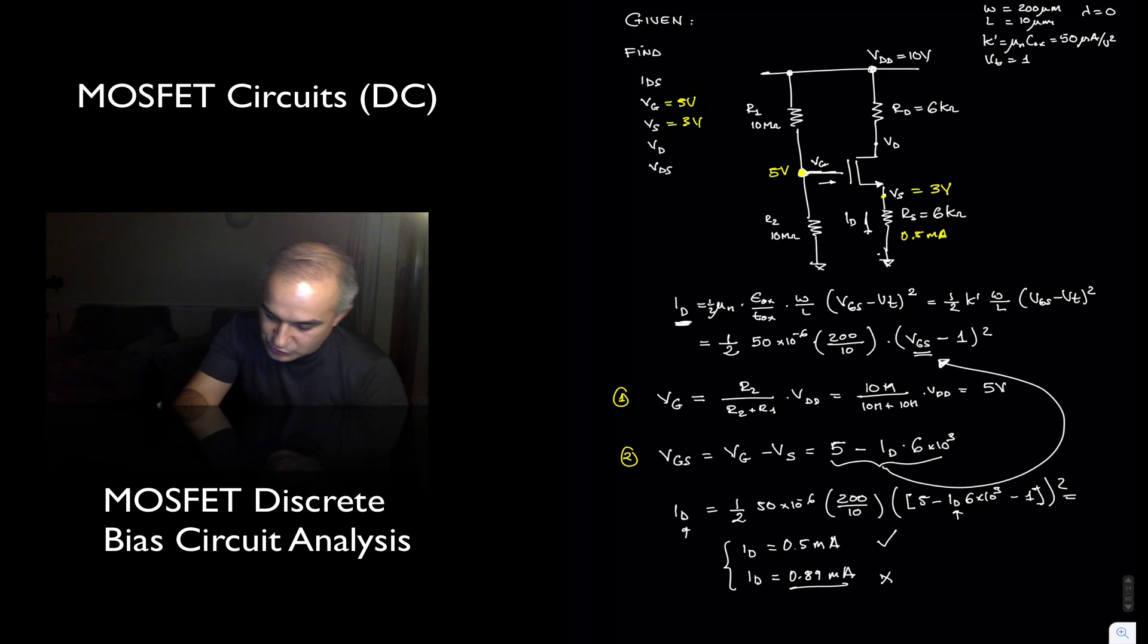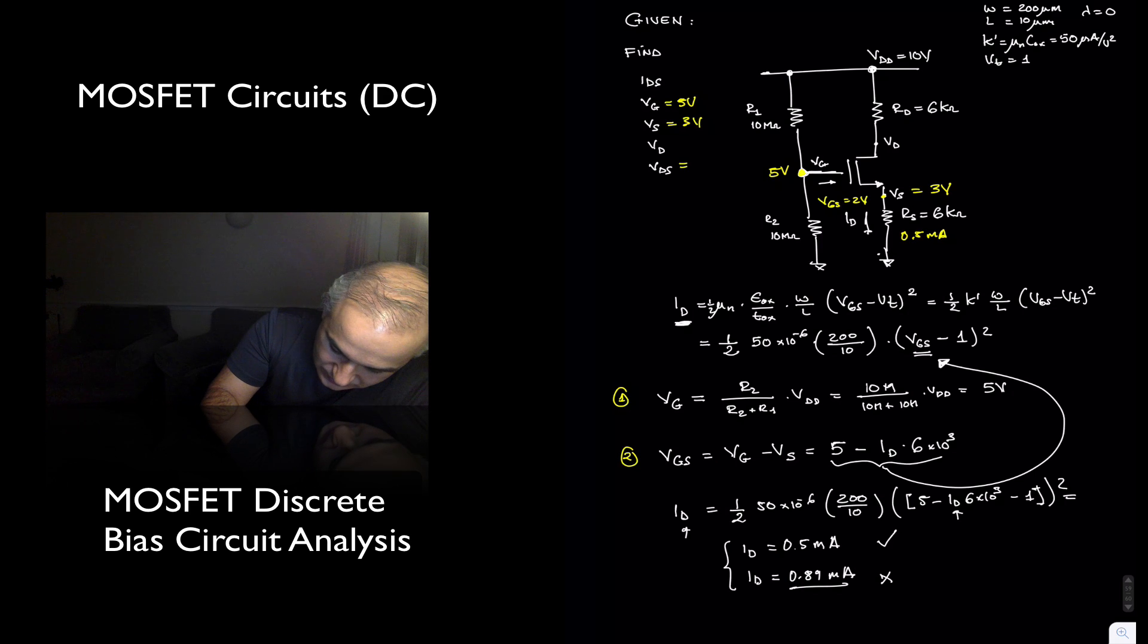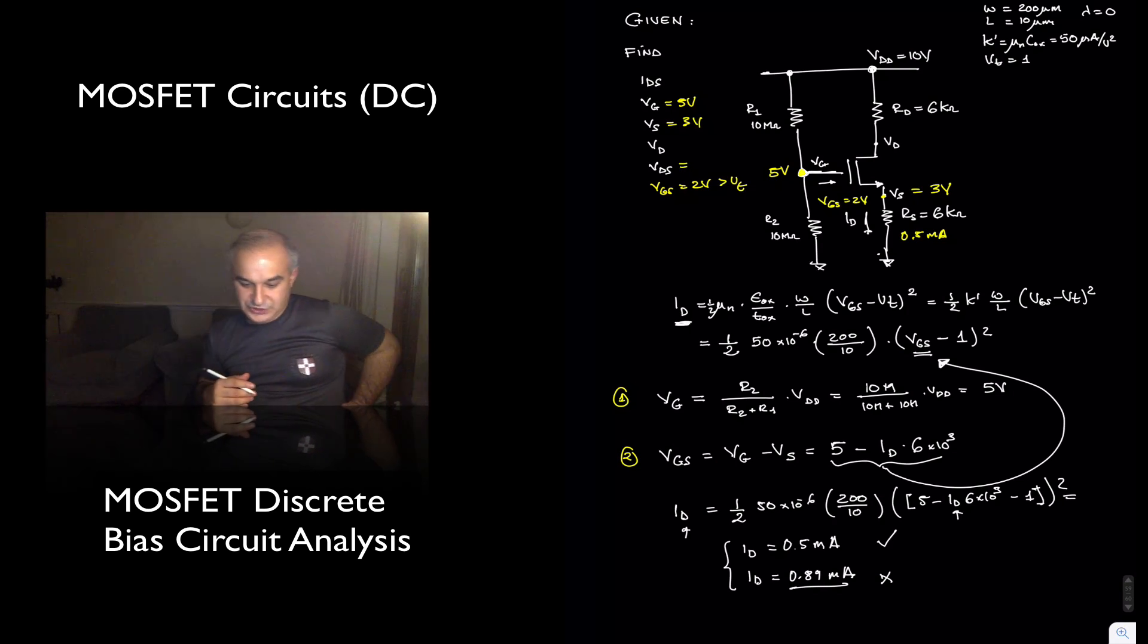So the voltage at the source is 3 volts. Voltage gate to source, now this voltage gate to source is 5 minus 3, is 2 volts, which is higher than the threshold voltage, as we assume.